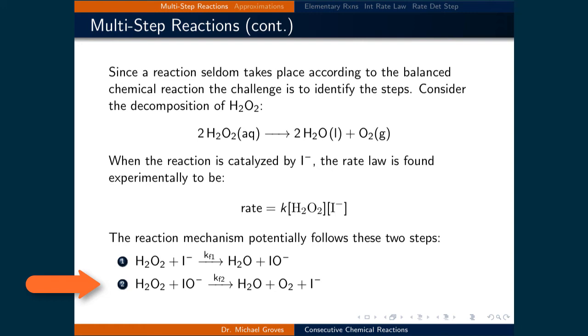In the second step, the second hydrogen peroxide molecule reacts with the IO- formed in the previous step and results in a second water molecule, the oxygen molecule, and regenerates the iodide ion.